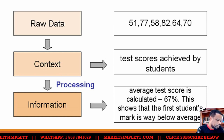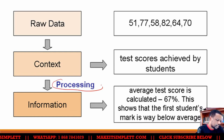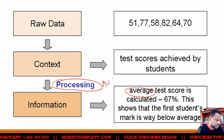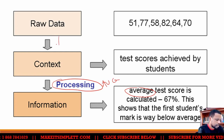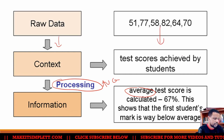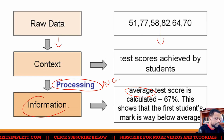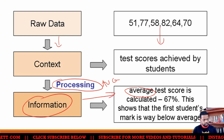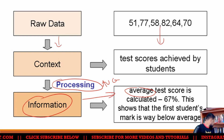We give it context and it's called test scores achieved by students. If you process that now, you could do something like average — so the processing is average. With all these numbers as test scores created by students, when you process that, the information you get is the average score of the students.